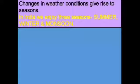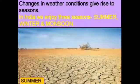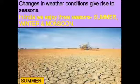In India, we enjoy three seasons. Summer is the season of roasting heat. The temperature rises above 40 degrees centigrade in many parts of India, leading to drying out of water bodies and water scarcity.